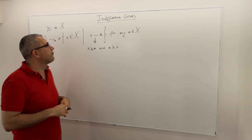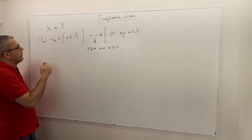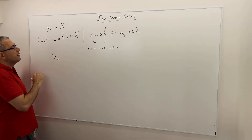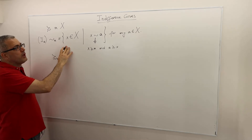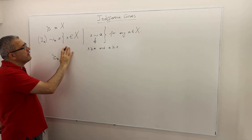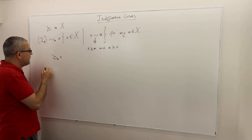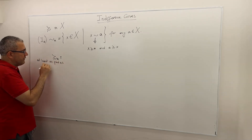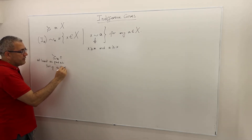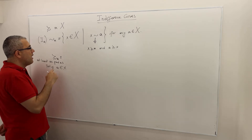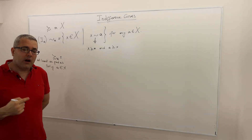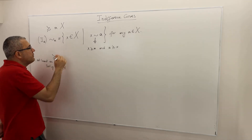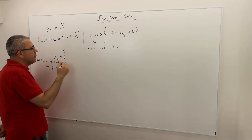Now, what if I want to define another set? We call this the 'at least as good as' set of alternative a, where a is an element in X. The at-least-as-good-as set of a means: what are the alternatives in X which are at least as good as alternative a?